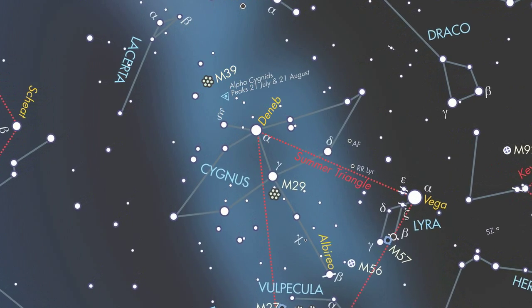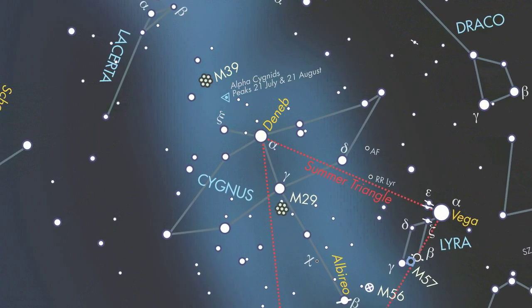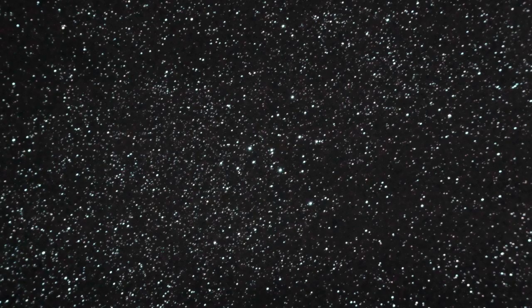Elsewhere in Cygnus, you'll also find the beautiful open star clusters M29 and M39, and a small telescope will show them sparkling away against the rich star fields in this region.